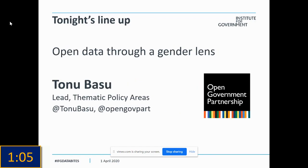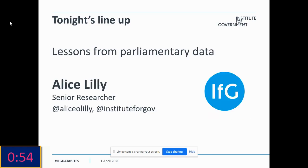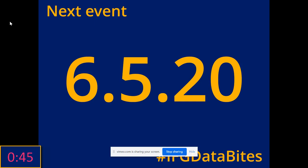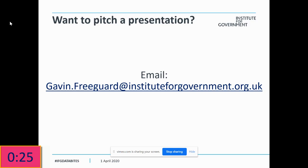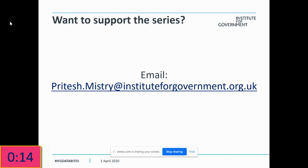Our third presentation will be Tanu Basu from the Open Government Partnership, talking about open data through a gender lens and why that's particularly important in times of crisis. And stepping in at the last moment, I'm delighted to welcome my brilliant colleague Alice Lilly, who will be talking about three lessons she's learned from parliamentary data the hard way. Our next event will be on Wednesday the 6th of May. Do join us for a virtual drink afterwards. We're looking to do this monthly — the first Wednesday of every month. If you'd like to pitch a presentation or know someone who should, please do get in touch. We're always looking for sponsors to keep the series going.